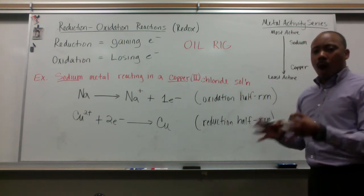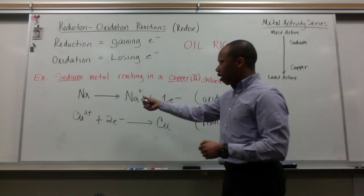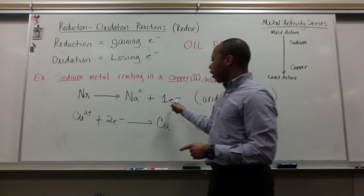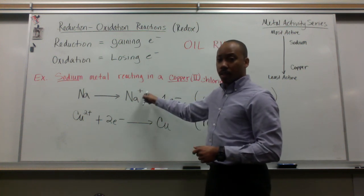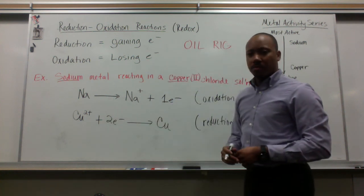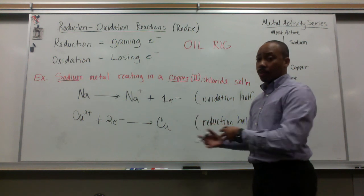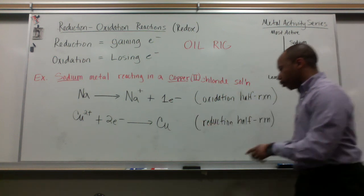Now, why does this occur? We notice that sodium only lost one electron to become Na1+. If that's the case, how did copper gain two electrons? It doesn't make sense initially, but let's look a little deeper into it.